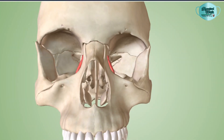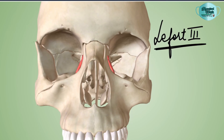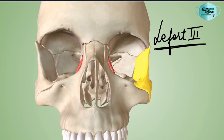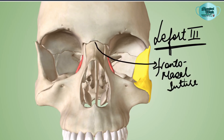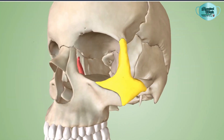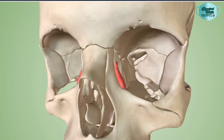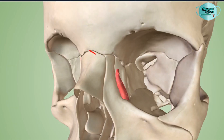Le Fort 3 fracture line is also called high transverse fracture or suprazygomatic fracture — the fracture line lies above the zygomatic bone. The fracture begins from the frontonasal suture bilaterally on either side. The fracture line runs transversely in a backward direction, parallel to the base of the skull, involving the ethmoid bone. The fracture line begins from the frontonasal suture, moves in a transverse and backward direction involving the ethmoid bone, and lies beneath the optic canal.